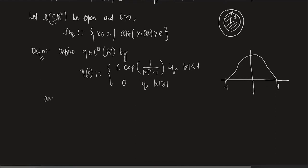The constant c > 0 is chosen such that the integral over ℝⁿ of η(x) dx equals 1. So we choose c in such a way that the integral of η over ℝⁿ is 1. This η is a very special, radial function — a function of |x| essentially. On any sphere of radius R, it is going to be constant.